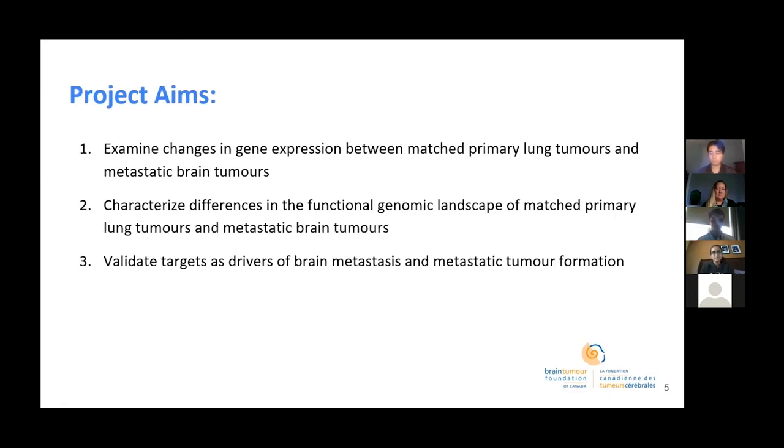For our project, we will examine changes in gene expression and characterize the functional genomic landscape of matched primary lung tumors and metastatic brain tumors, as described in aims 1 and 2. Together, these two aims will identify the genes that are involved in the metastatic cascade and initiation of the brain tumor. For our final aim, we will validate those gene targets that we've identified as drivers of brain metastasis and metastatic tumor formation.